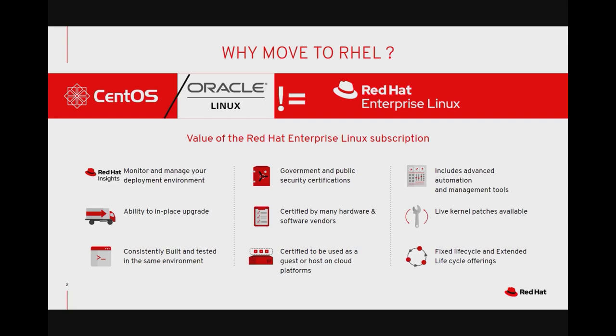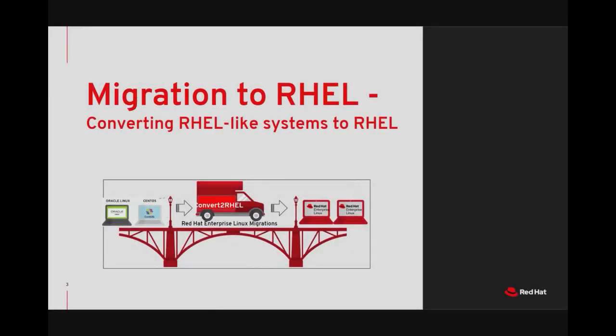Bearing in mind the value add that comes with a RHEL subscription, let's talk about the migration process. The migration process from CentOS and Oracle Linux is simplified with the Convert to RHEL utility. Convert to RHEL offers a single automated process for migrating systems to RHEL without the need for redeployment. The ideal use case for such conversions is if you're transitioning your development environment on CentOS to a production environment on RHEL, or if you're transitioning production workloads currently running on CentOS or Oracle Linux to production environments on Red Hat Enterprise Linux.